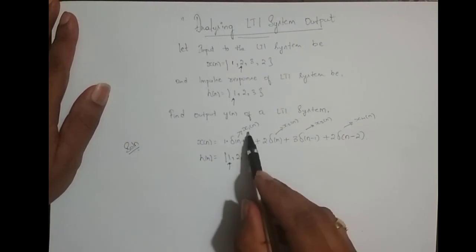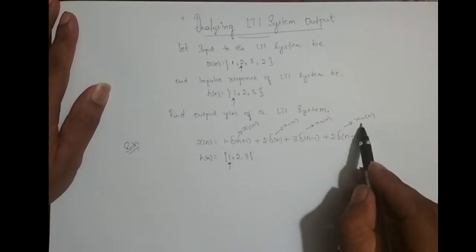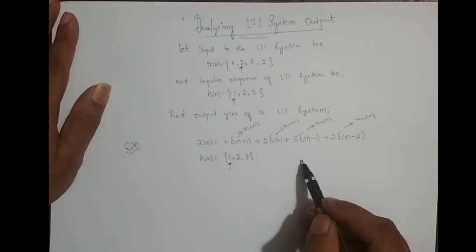So when I add x1(n), x2(n), x3(n), x4(n), I should get x(n) back. Right.